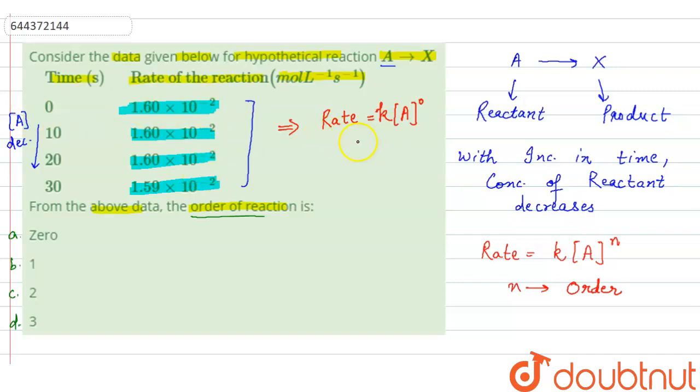So, from here, order of reaction is 0. As n is 0, so order of reaction is 0. So, here the answer will be option A, 0. So, option A is the answer.